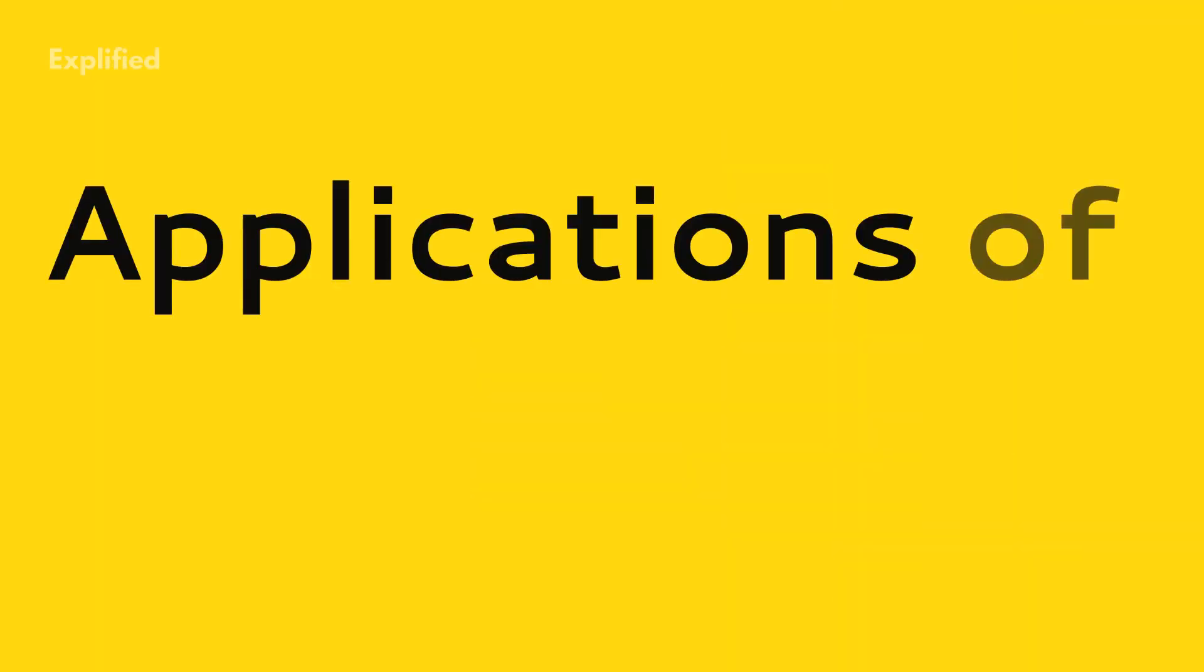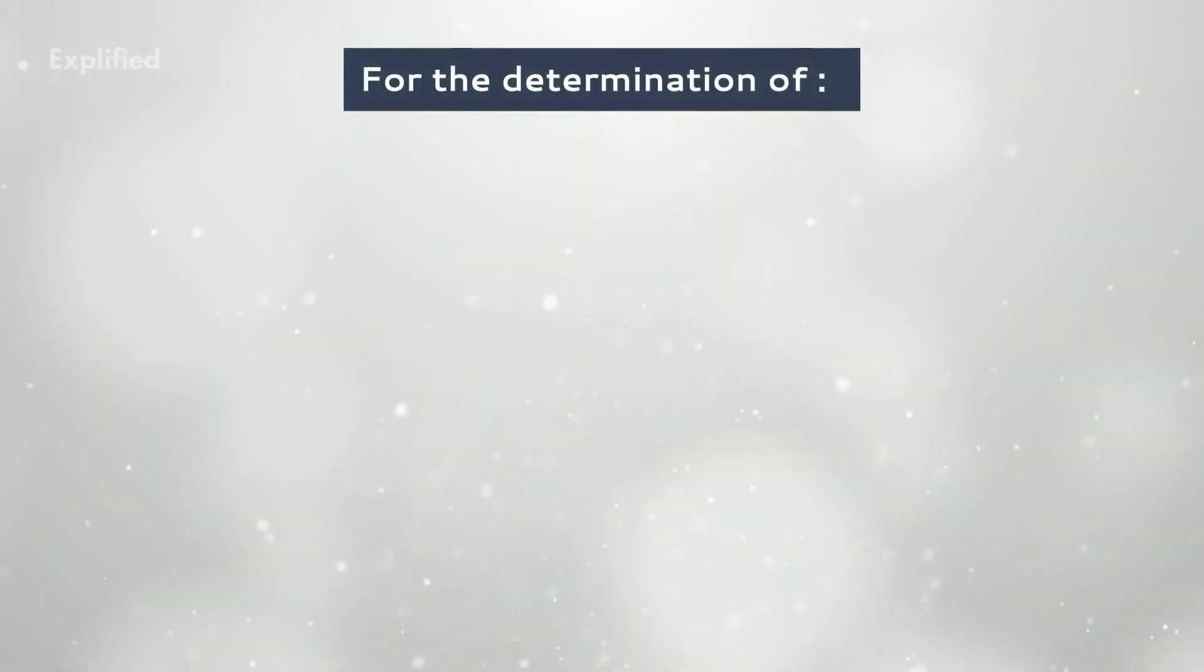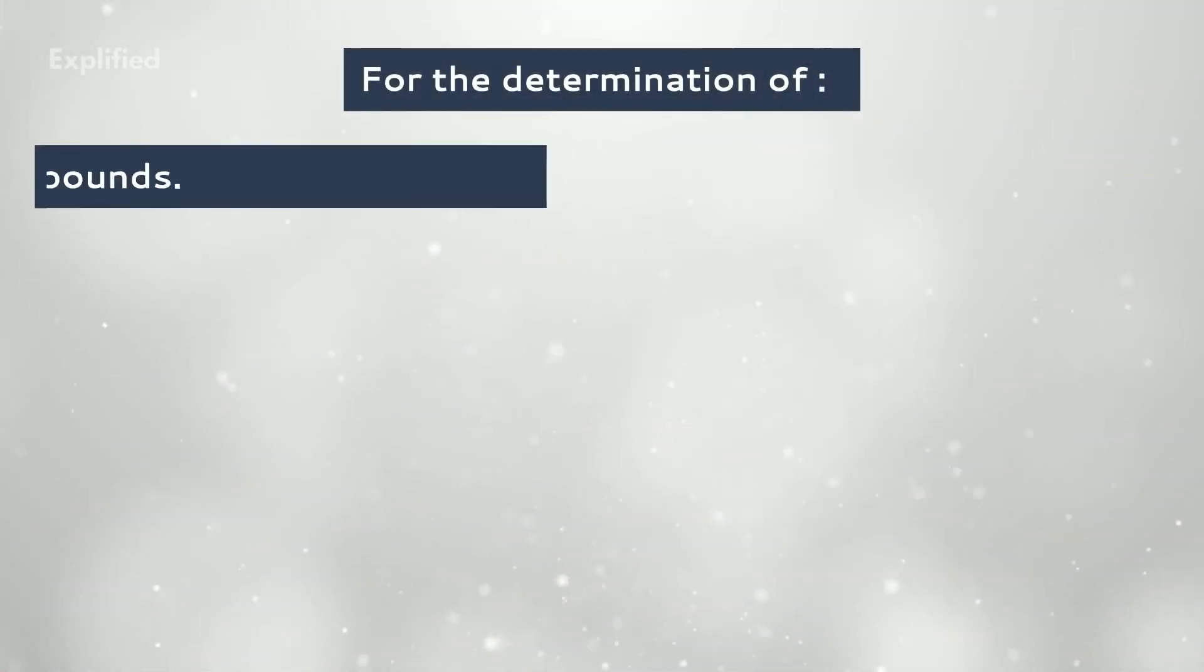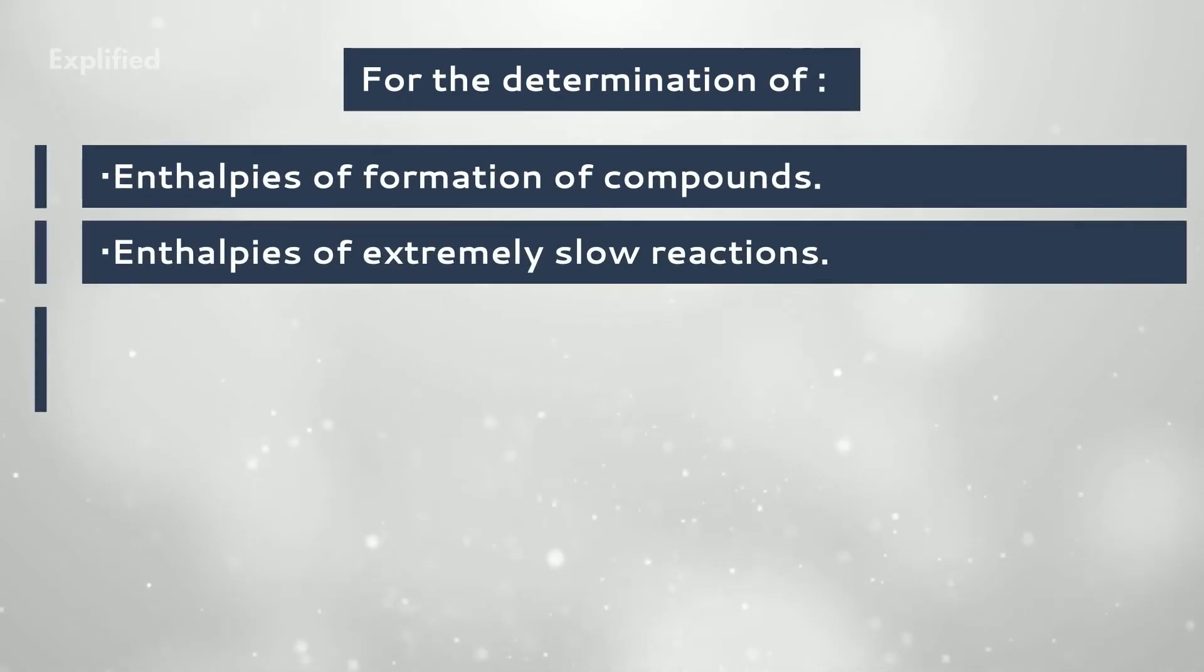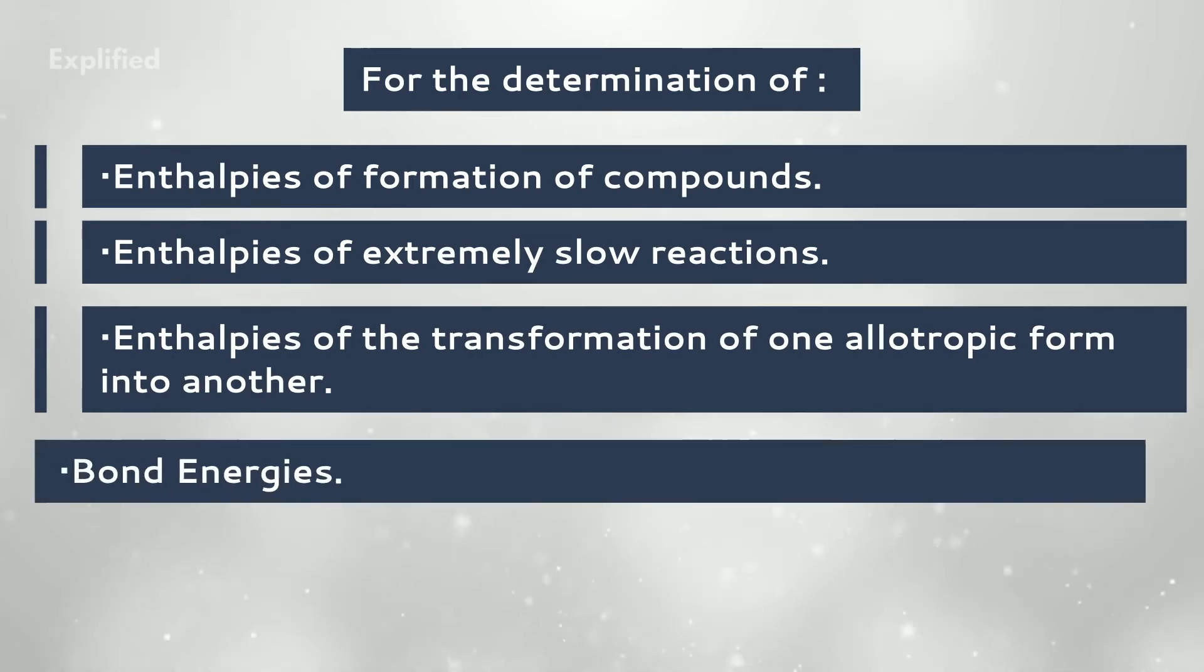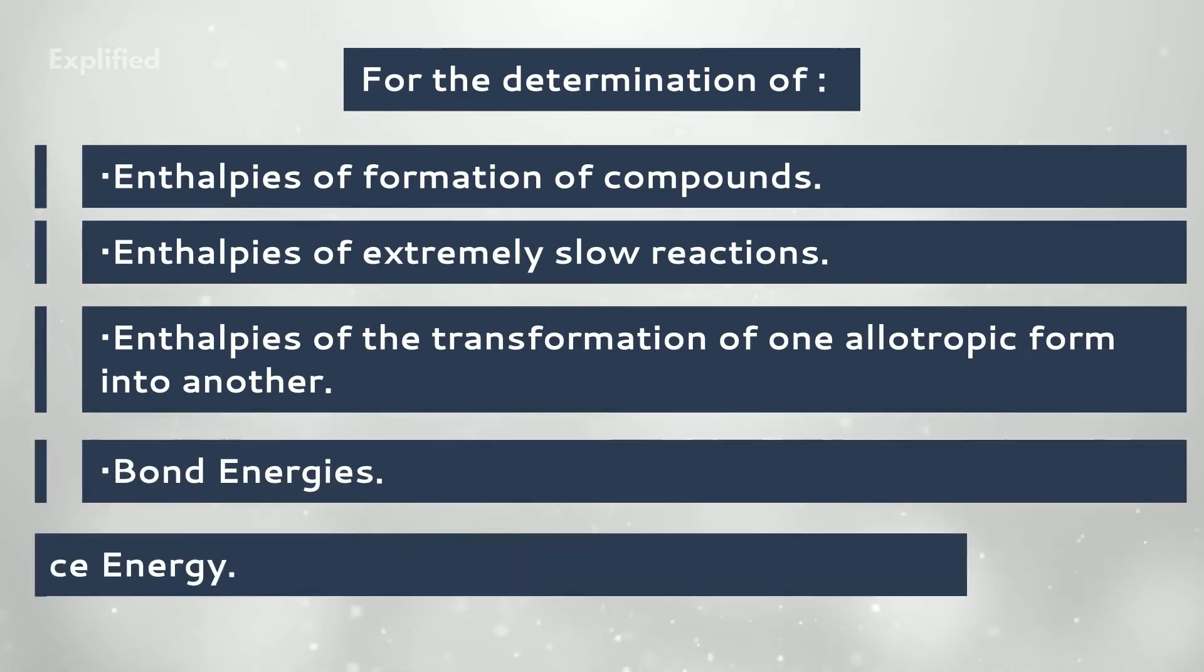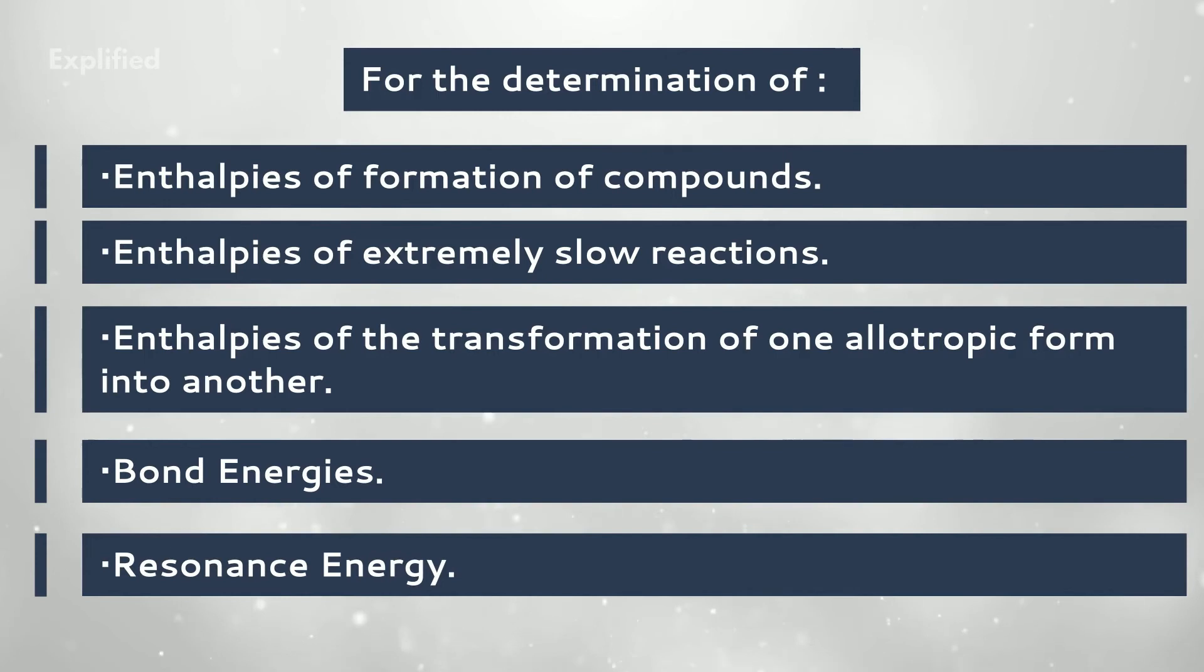Applications of Hess's law. The applications are as follows: For the determination of enthalpies of formation of compounds. For the determination of enthalpies of extremely slow reactions. For the determination of enthalpies of the transformation of one allotropic form into another. For the determination of bond energies. For the determination of resonance energy.